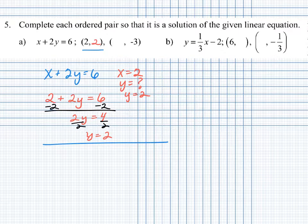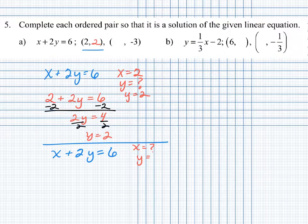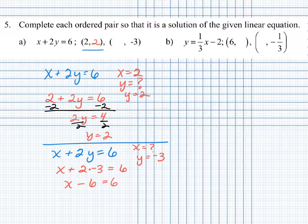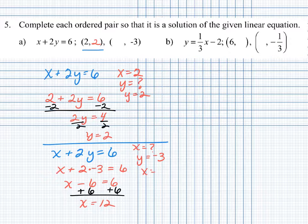For the next point with the same equation x plus 2y equals 6, the x value is unknown and y equals negative 3. We substitute y equals negative 3: x plus 2 times negative 3 equals 6, so x minus 6 equals 6. Adding 6 to both sides gives x equals 12. So when y equals negative 3, x equals 12, and our solution is the ordered pair (12, negative 3).